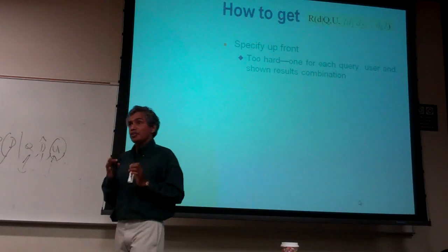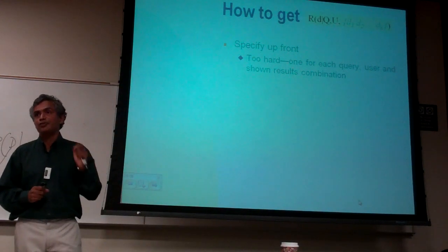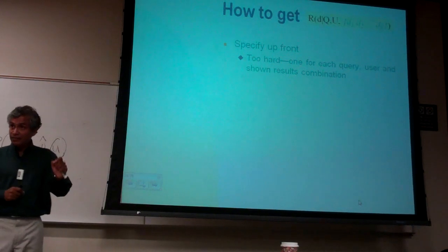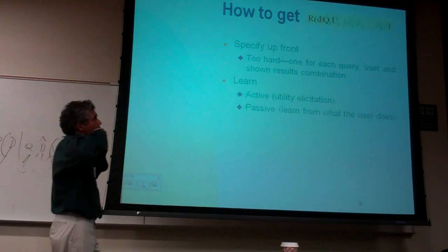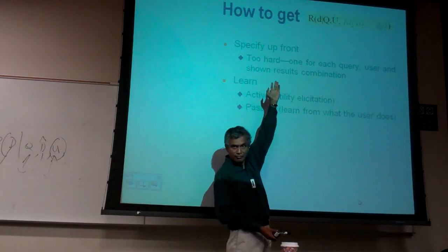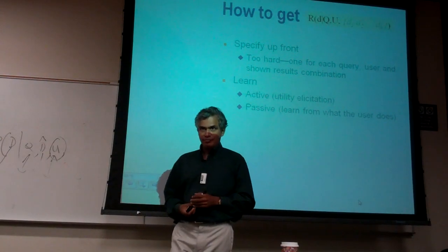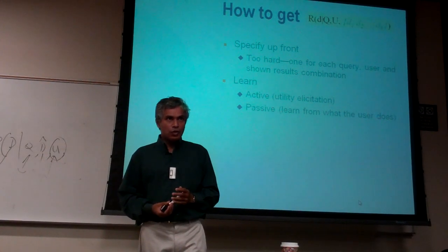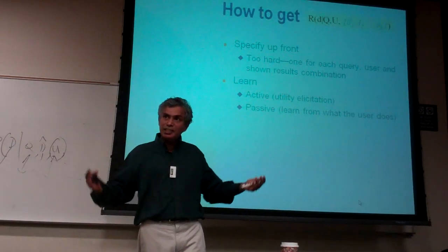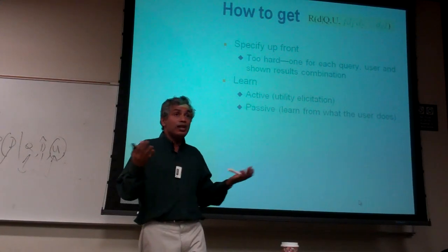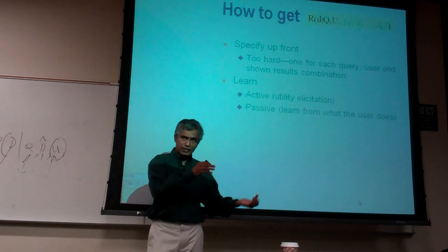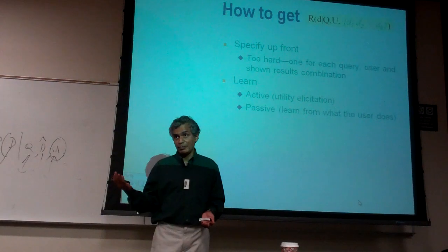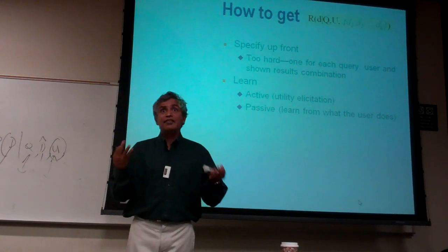Start always with the most obvious idea and ask yourself, why can't you do it? Because sometimes you can, in which case you should do that. The second approach is learn — actively figure out these numbers from examples. I would get some number of judgments and then try to learn the overall function. Some of you know machine learning, and machine learning is finding the function given the data.